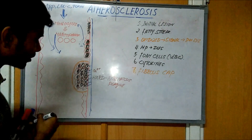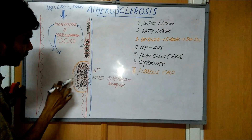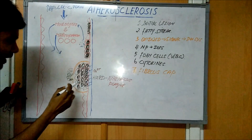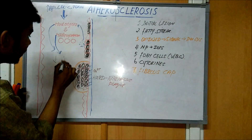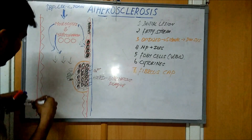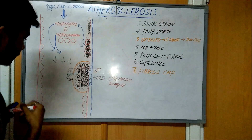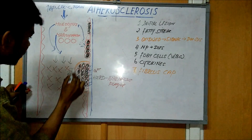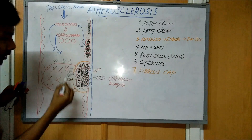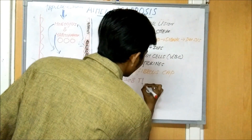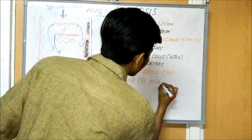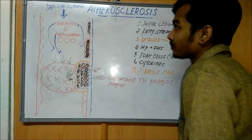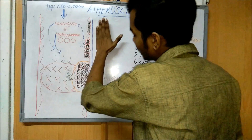After this there is an enlargement and rupture of the plaque. When the plaque ruptures, thrombogenic factors are activated and a blood clot forms. This stage is called the thrombogenic plaque. This is the process of atherosclerosis.